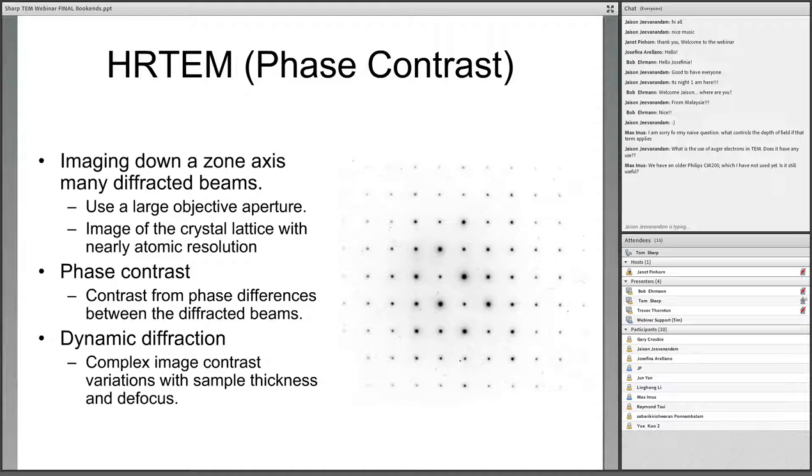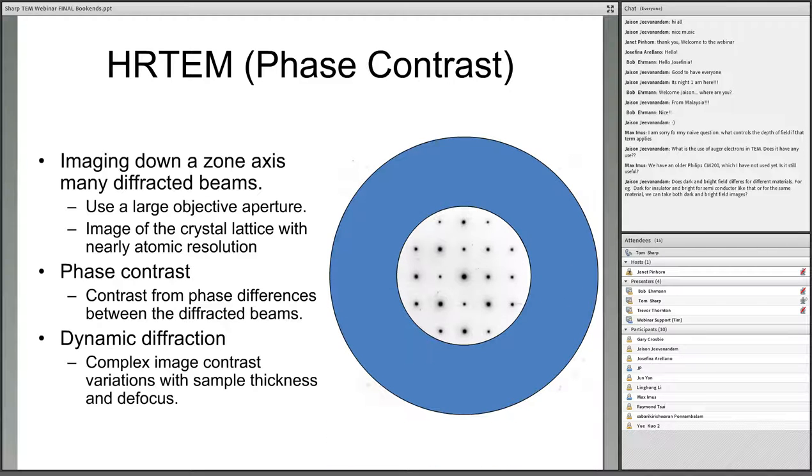High resolution TEM is also known as phase contrast imaging. This is a little bit different. In this case, we take the image down the zone axis of the crystal. Here is a diffraction pattern for olivine again. Looking directly down the zone, you have lots of spots that are excited. What we do is we use many of those spots and recombine them in the image to form a high resolution image. We don't generally use the entire pattern. We usually use a large objective aperture to limit the highest frequency features.